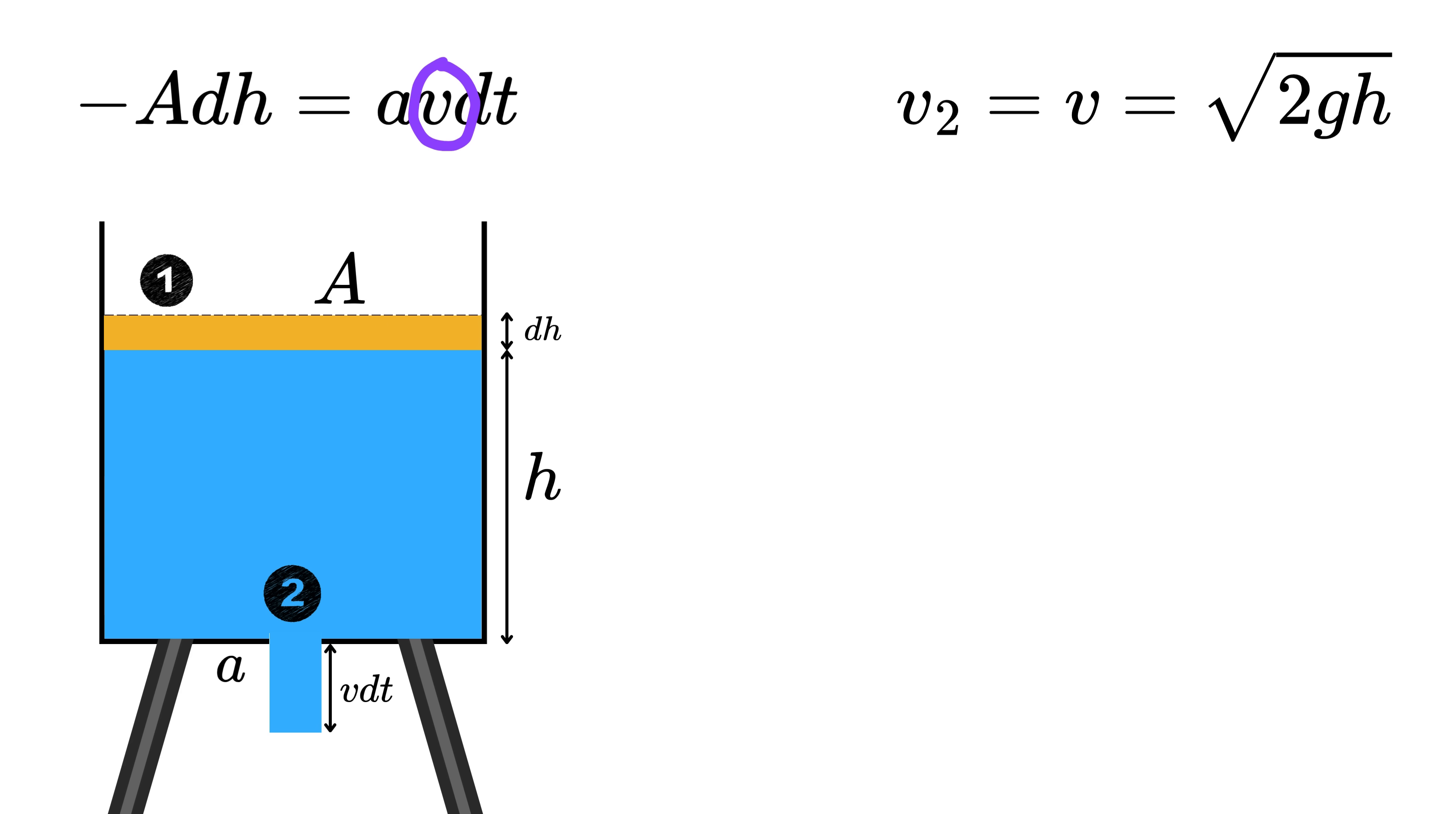Now replace this v by the expression we found earlier, which is square root of 2 times g times h. Now here comes the magic. Take the square root of h on this side and everything else on the right side to get this.